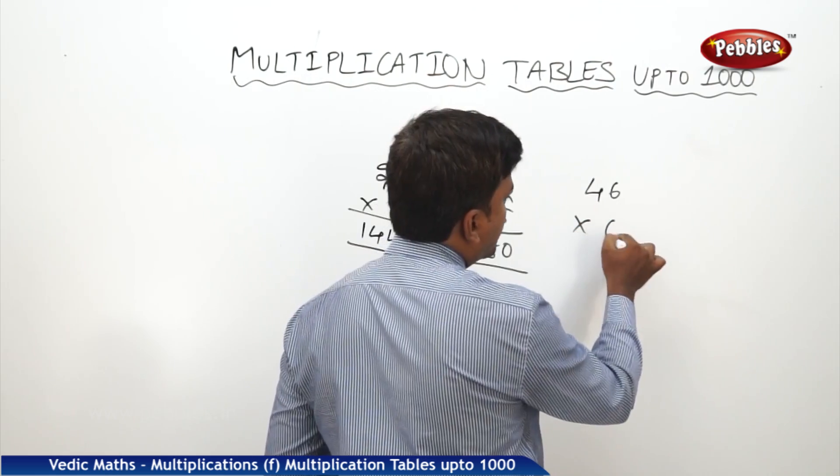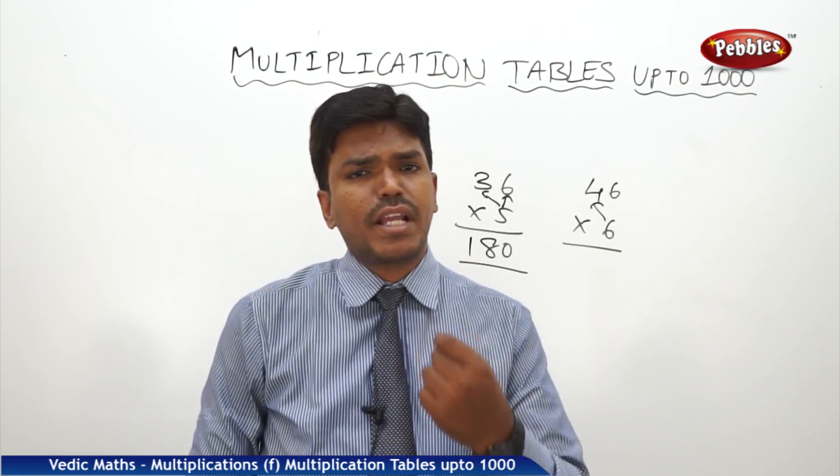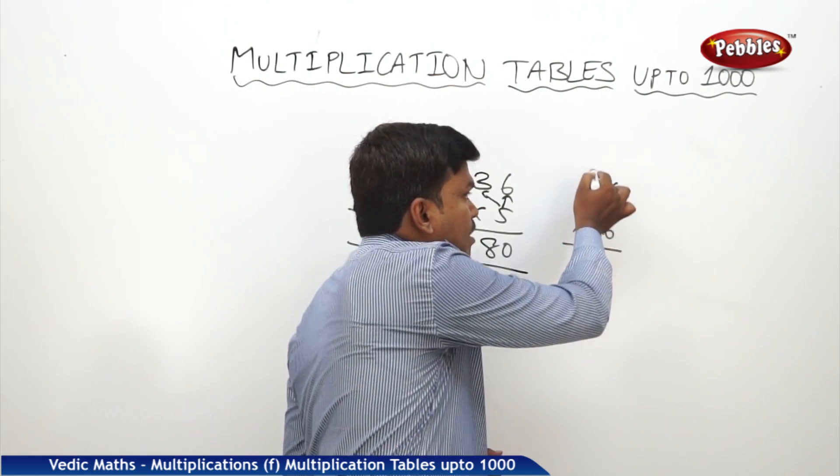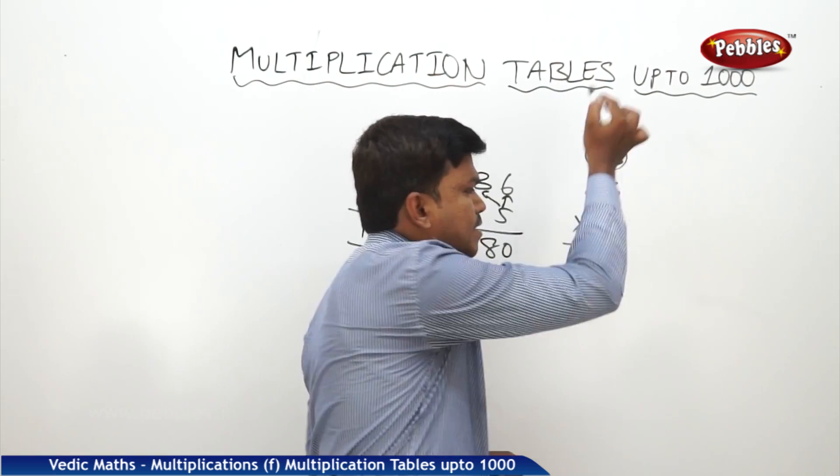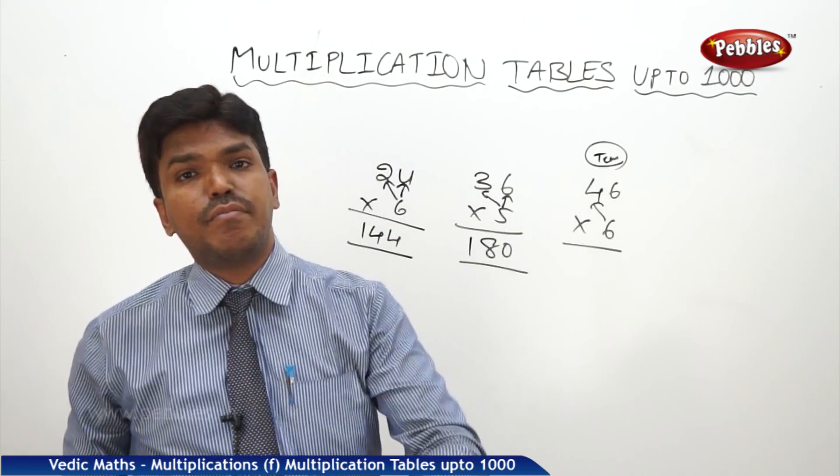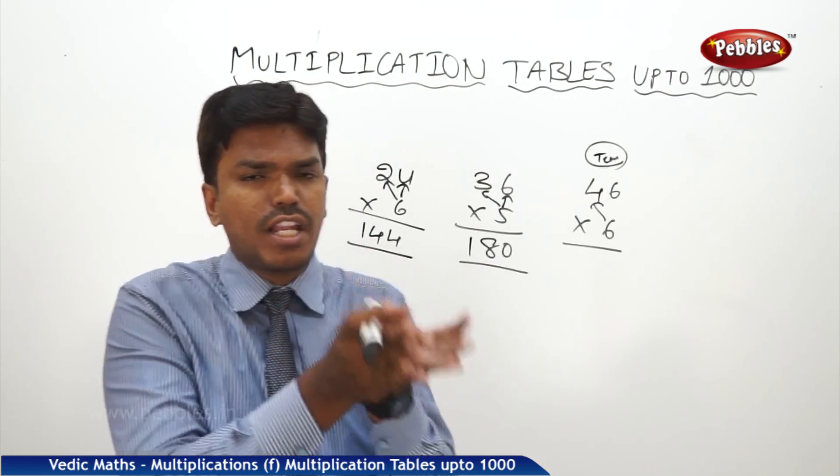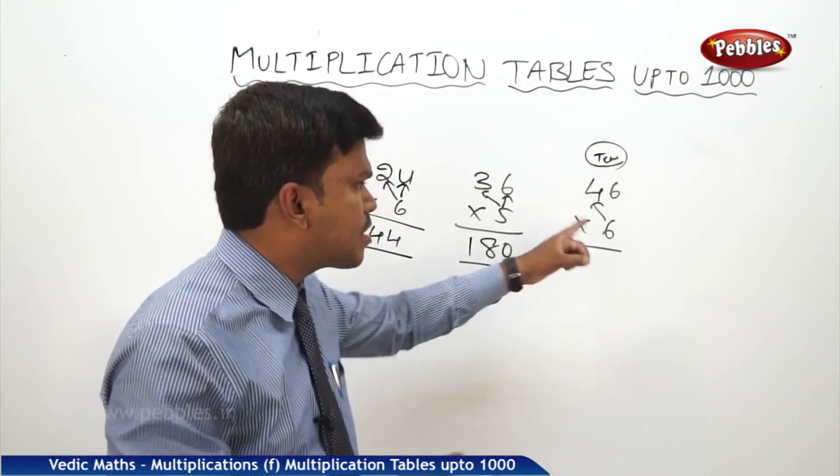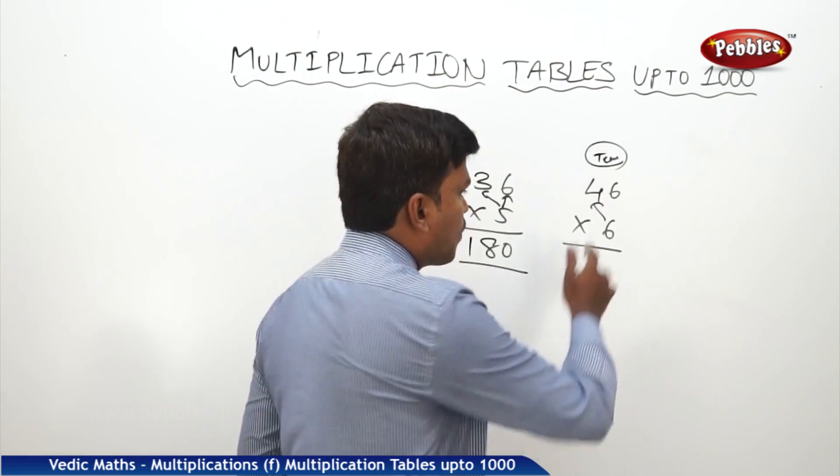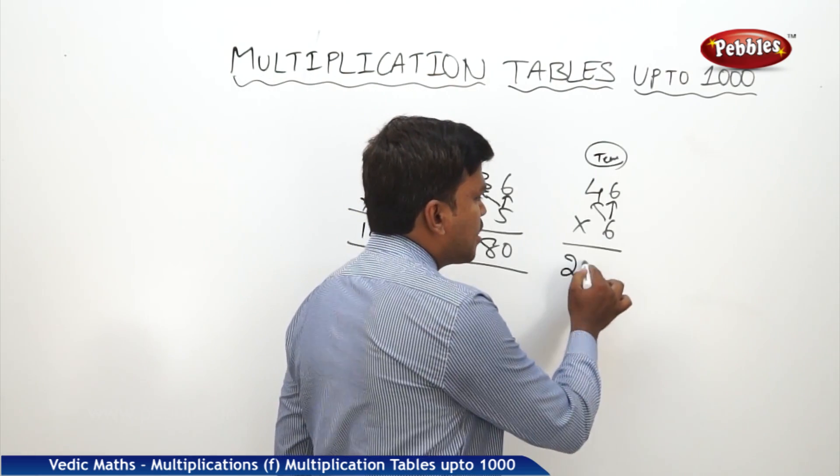Suppose I need 46 six times. What is 6 fours? 24, but take it as 240. Why? Because we are multiplying with the digit which is in the tenth place. That's why we are imagining the number as 240. I'm just keeping a zero at the end. Now what is 6 fours? 24, take it as 240. Keep 240 in the mind. Now what is 6 six? 36. 240 plus 36, it's 276.